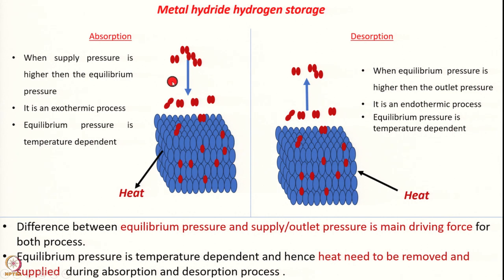During the absorption process, hydrogen is supplied to the metal hydride bed at a pressure higher than the equilibrium pressure of the metal hydride. As you studied in previous lectures, equilibrium pressure is a temperature-dependent quantity. During absorption, the hydrogen absorbs inside the metal hydride — it is an exothermic process, so heat is generated inside the metal hydride reactor.